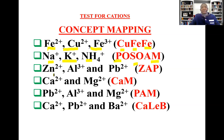Then we have ZAP — that is zinc, aluminium, and lead. These are grouped together because they form a white precipitate which is soluble in excess sodium hydroxide.